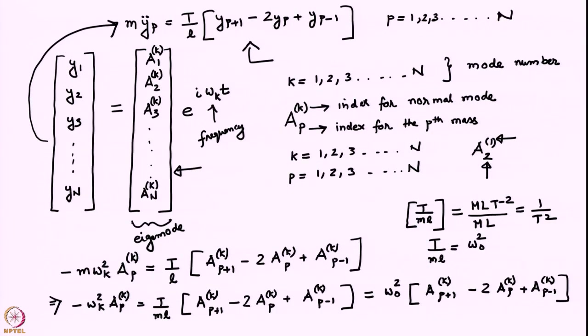Recall that in the last class, we had discussed the equations of motion of n coupled masses. This was inherently a non-linear system and we had linearized about the base state or the equilibrium state for small angles. We had got a coupled set of ordinary differential equations. In this particular way of doing things, we had bypassed the matrix method and found the eigenvectors and the frequencies of oscillation without explicitly writing down matrices, keeping the number of masses arbitrary but finite.